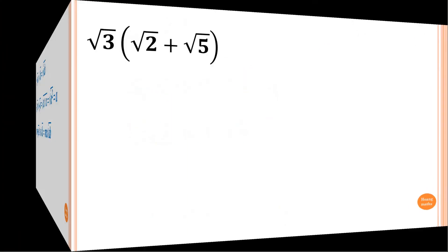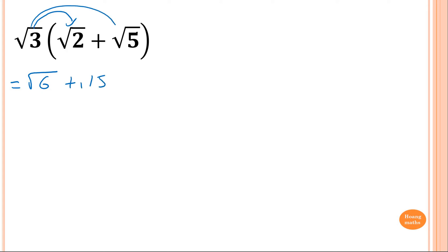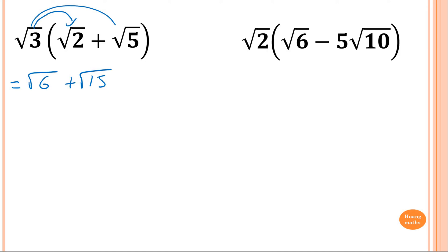Let's get straight into this. Square root of 3 times bracket square root of 2 plus square root of 5. This is just a basic expansion — this times that. So 2 times 3 is 6, giving square root of 6. And 3 times 5 is 15, so square root of 15.